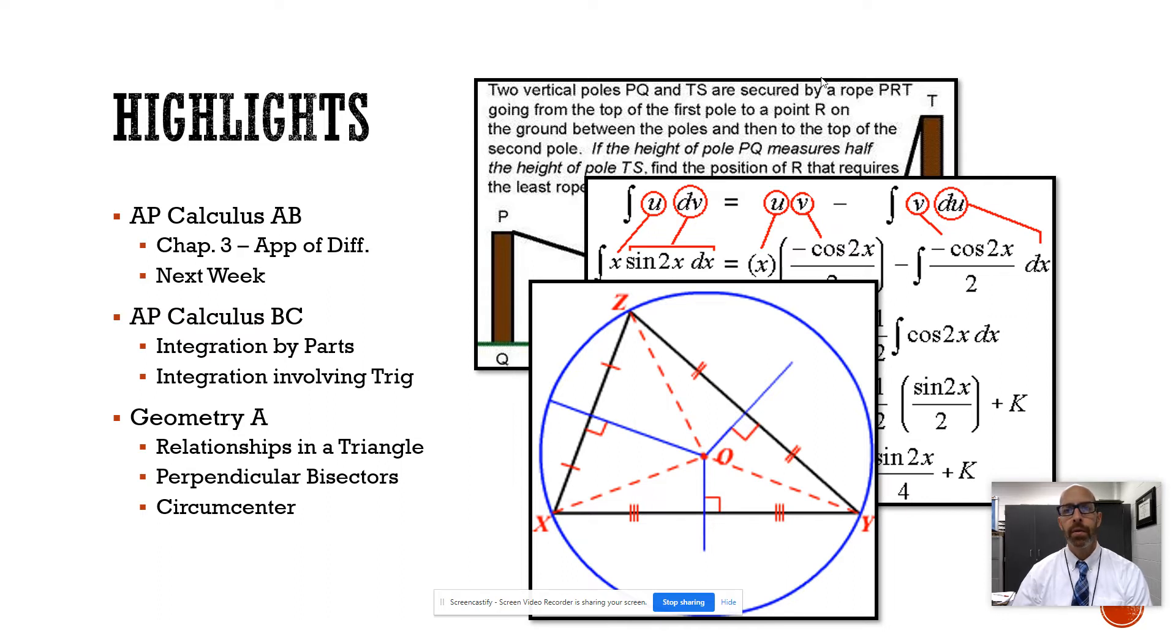For example, today we looked at perpendicular bisectors of a triangle, and it turns out that the perpendicular bisectors of a triangle hit at the point called the circumcenter, where you can construct a circle that goes through the three vertices of the triangle.